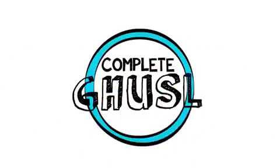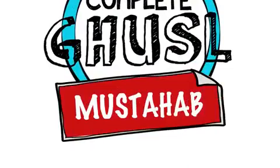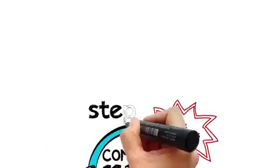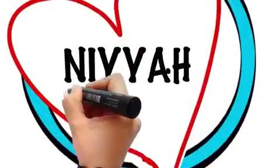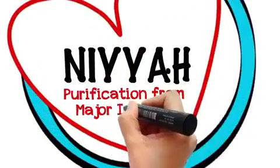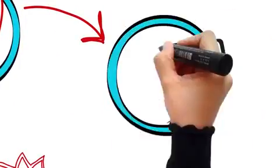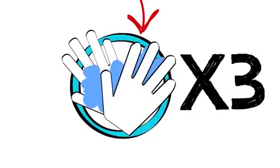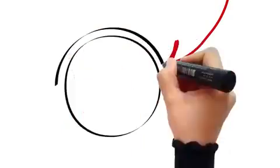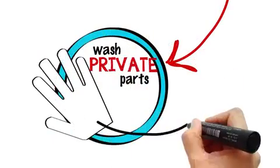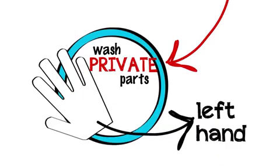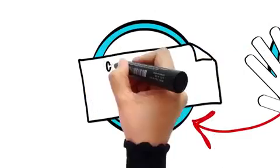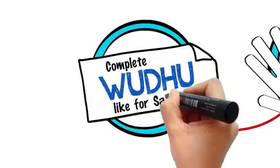As for the complete Ghusl — and this is the Mustahab one, it is how the Prophet ﷺ took a bath — this is how you do it. Begin with an intention to purify yourself from the major impurity. Then say Bismillah. Wash your hands three times. Then with your left hand, wash your private parts and anywhere else that is contaminated with traces of impurity. Then make a complete Wudhu just as you would for prayers.